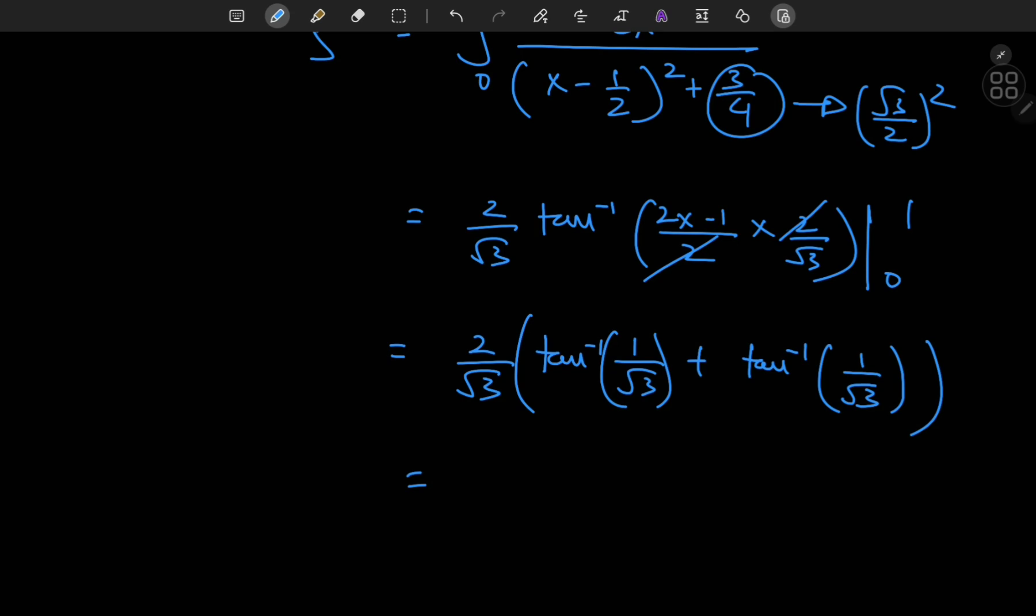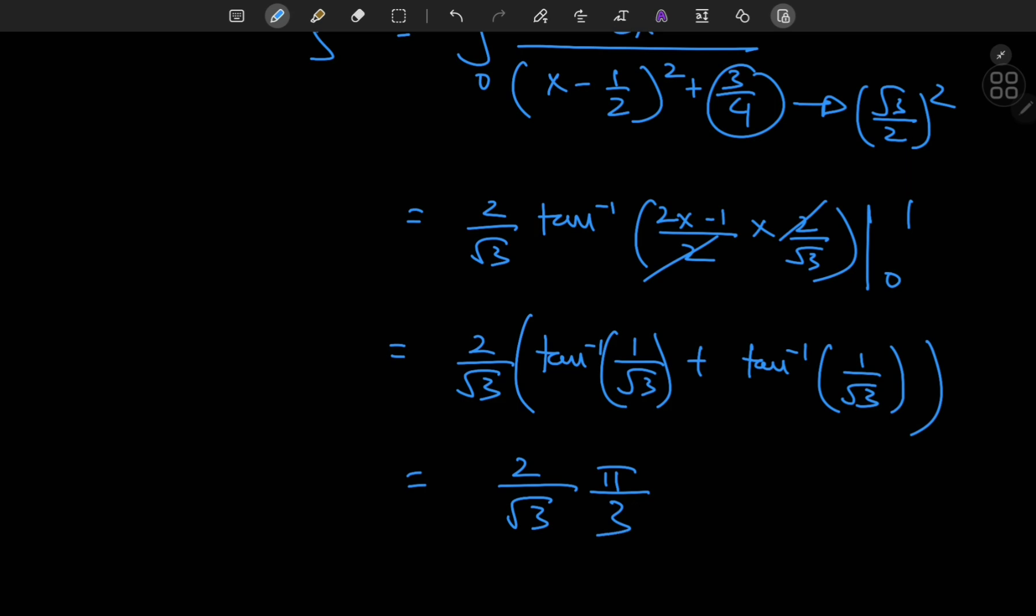So that means we have the inverse tangent of 1 by root 3 times 2. And the inverse tangent of 1 by root 3 is pi by 6.